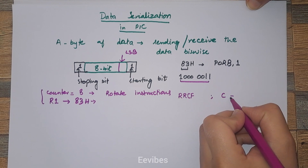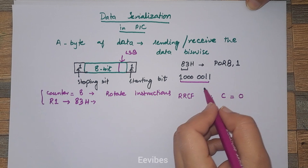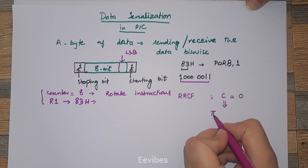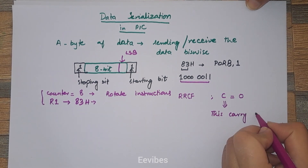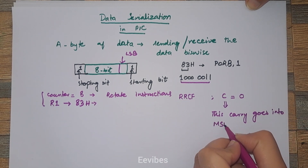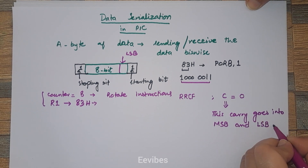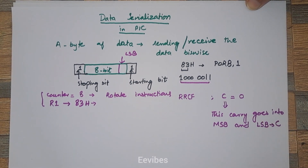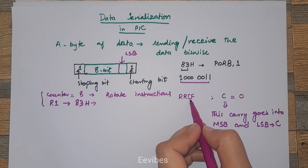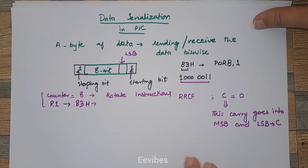We will set the initial carry equal to zero. In the rotate right through carry instruction, the carry goes into the MSB first, and the least significant bit is copied into the carry flag. This is how Rotate Right through Carry works. You can also see the video lecture where all four rotate instructions are explained.